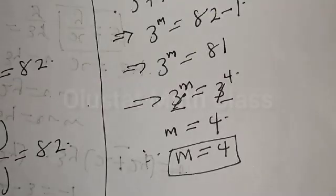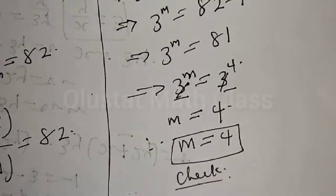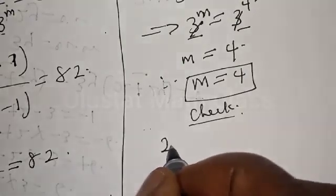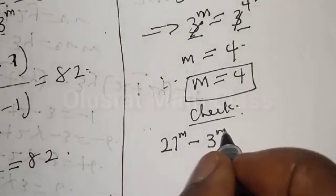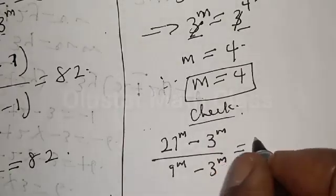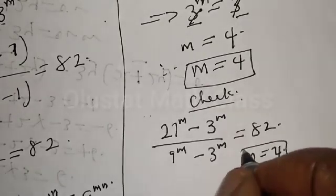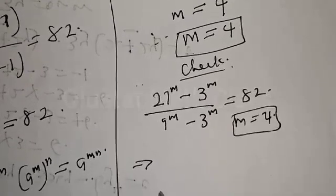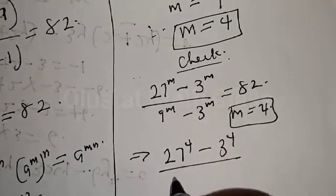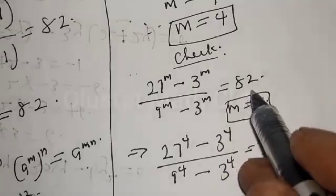We may also check to confirm our answer. From the given equation, 27 raised to power m minus 3 raised to power m, over 9 raised to power m minus 3 raised to power m, equals 82. With m equal to 4, we substitute: 27 raised to power 4, minus 3 raised to power 4, over 9 raised to power 4, minus 3 raised to power 4. Let's see whether it equals 82.